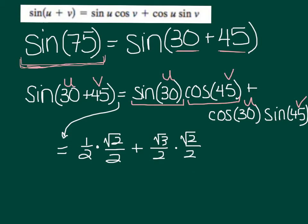Now if you were missing where all those came from, sine of 30 is right there, cosine of 45, cosine of 30, sine of 45. So hopefully those arrows helped.